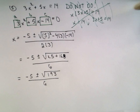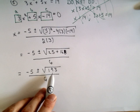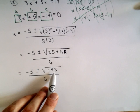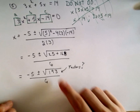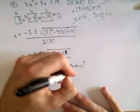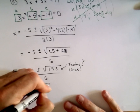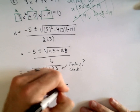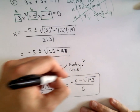Is 193 prime? Let's see — 3 doesn't go into it, no even number does, 5 doesn't, 7 times 27 is 189 so 7 doesn't quite work, and 9 doesn't either. So maybe 193 is prime — and even if it doesn't simplify, there's no guarantee it will. I'll leave that for you to check on your own. So we have two real solutions: x equals negative 5 plus the square root of 193, all over 6, and x equals negative 5 minus the square root of 193, all over 6.